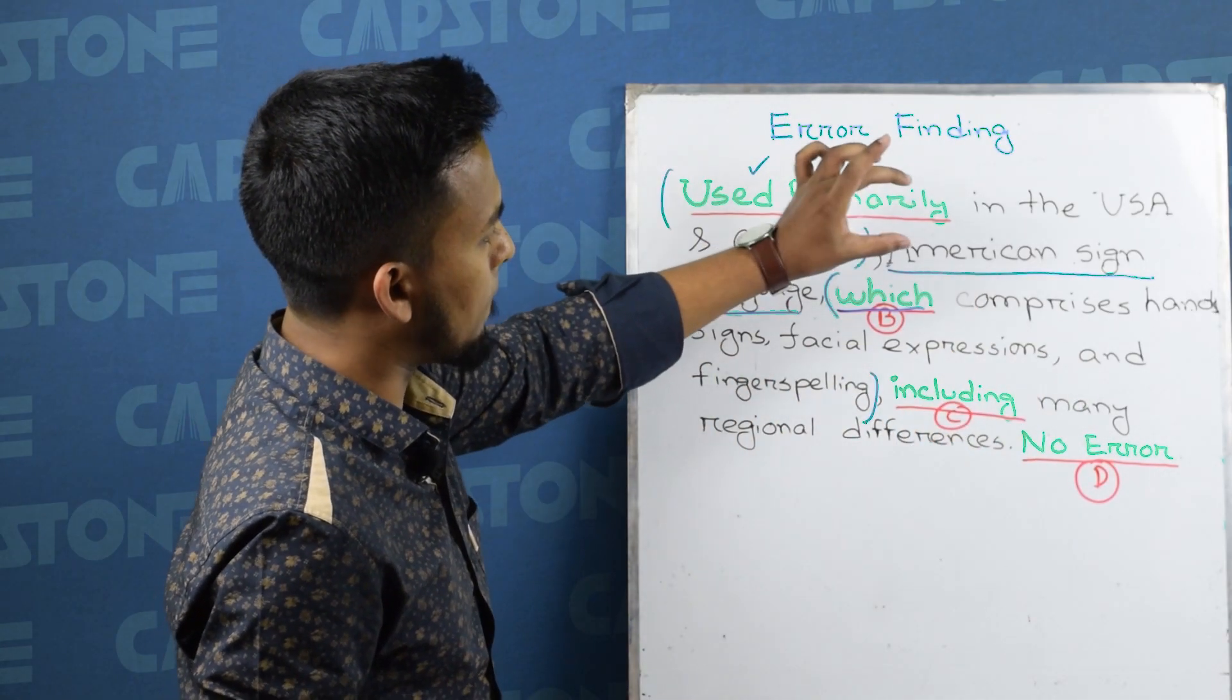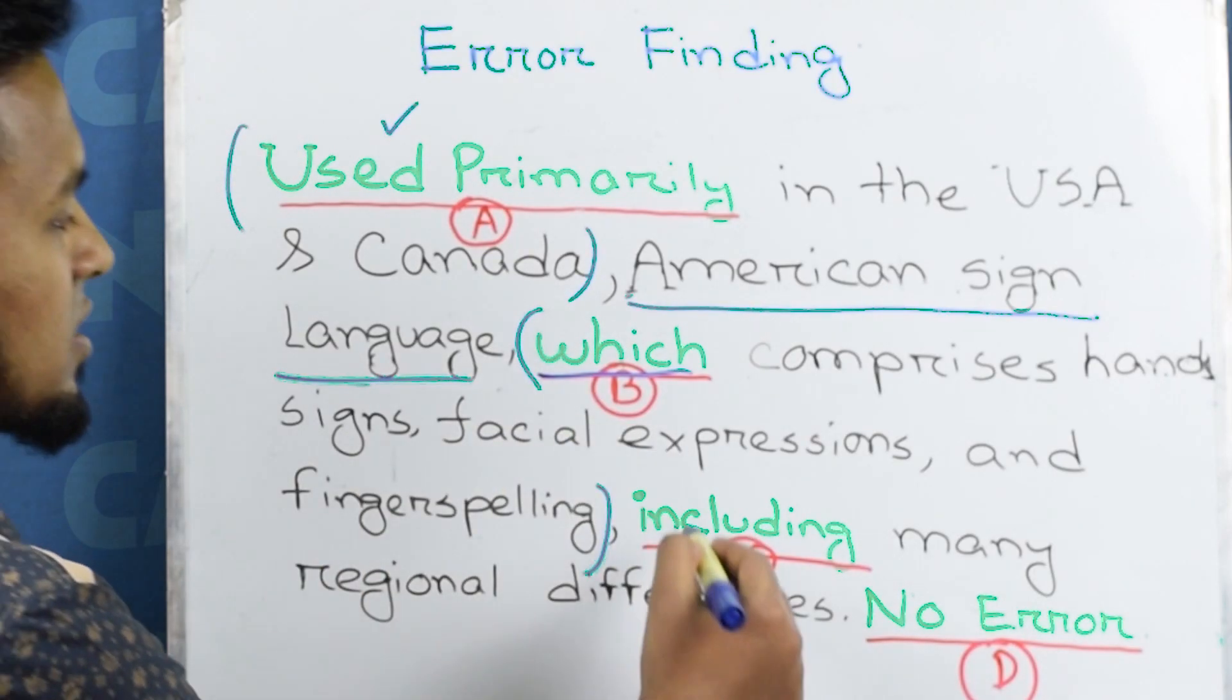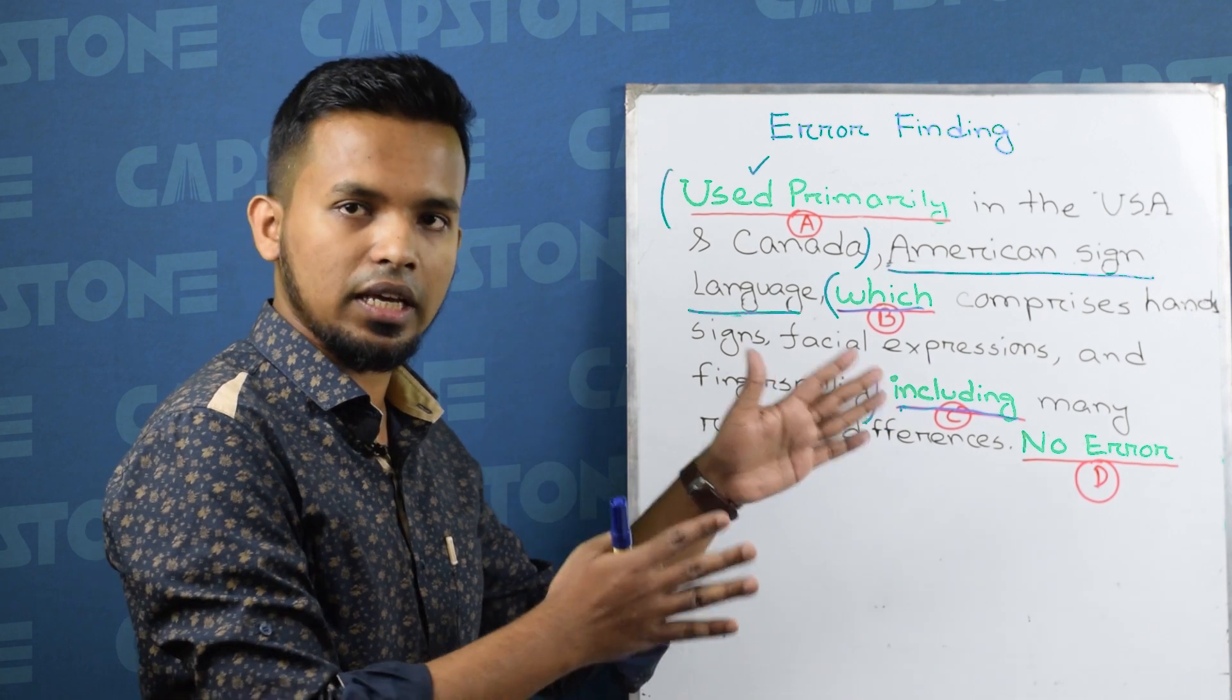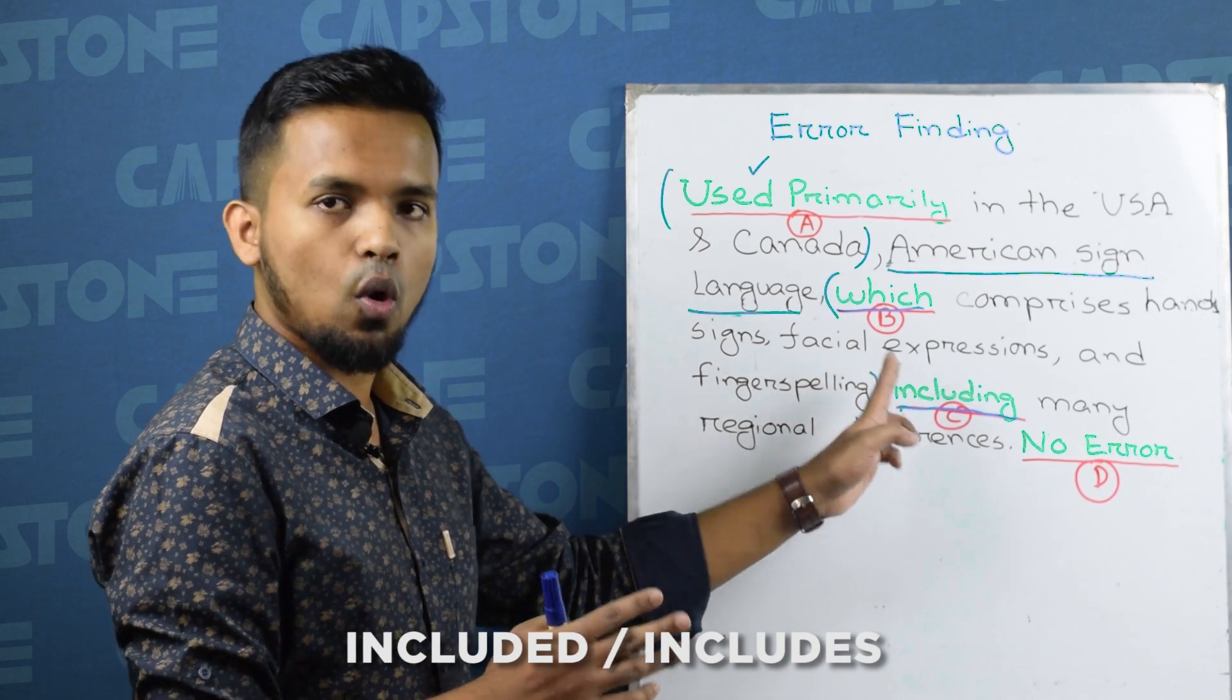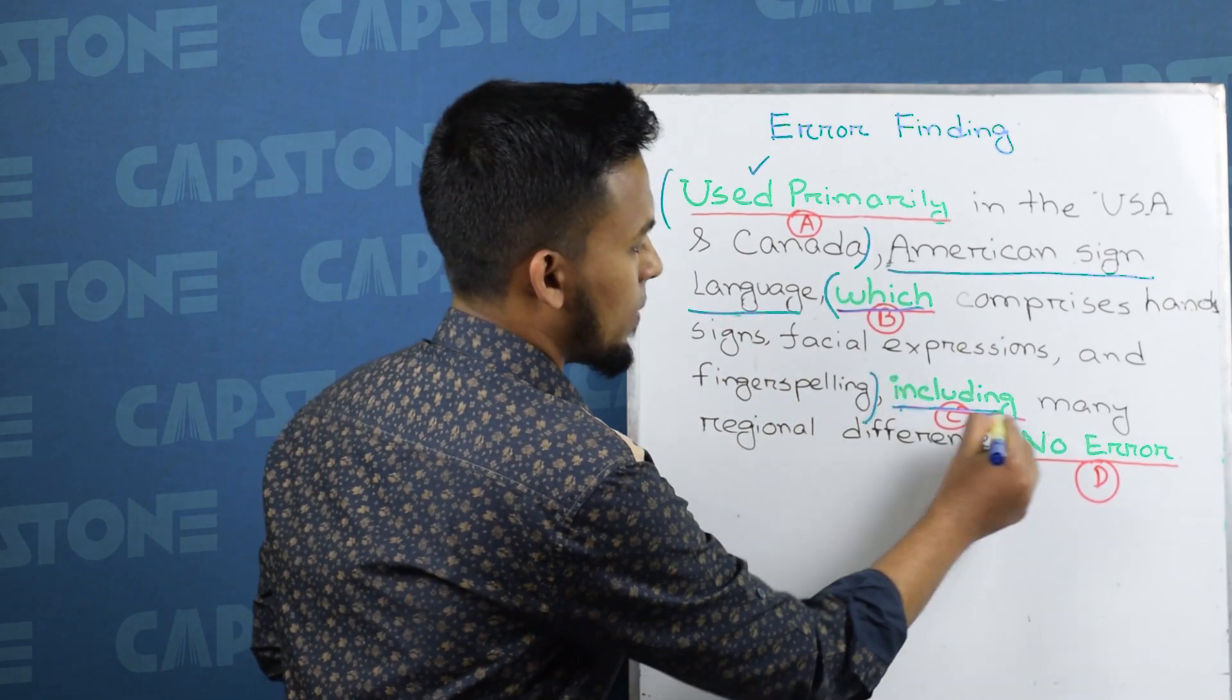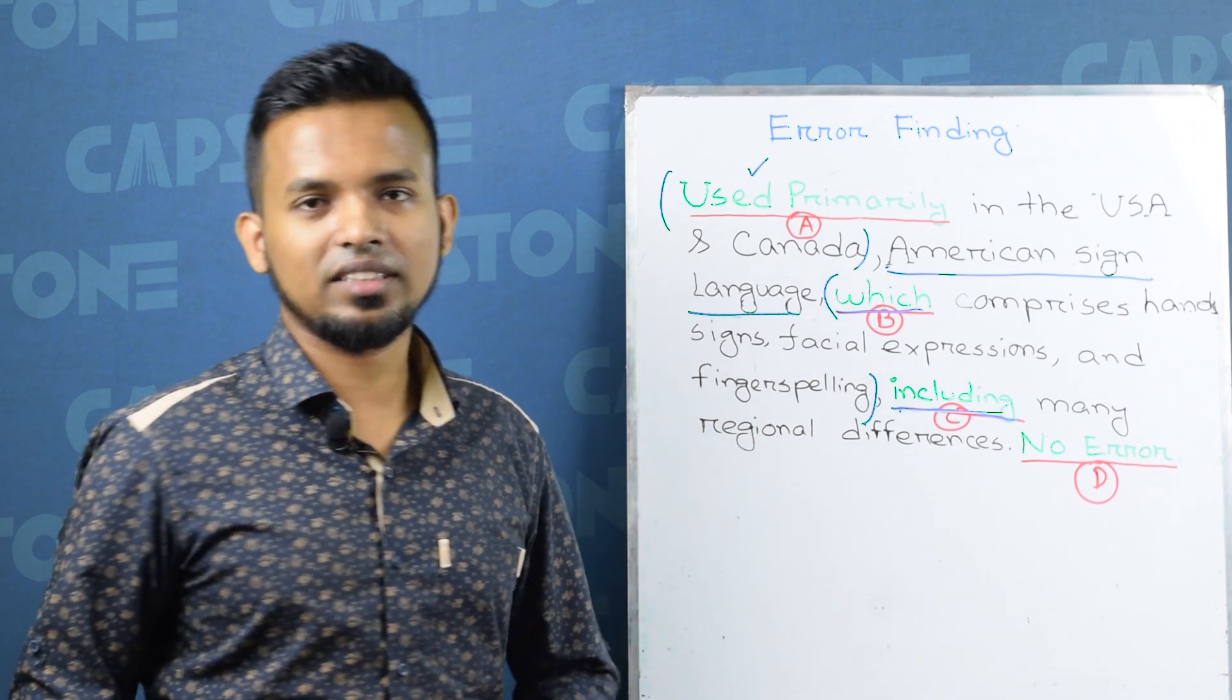After American Sign Language then there is no finite verb. We know that one subject carries one finite verb, right? So in this case, including here is not a finite verb, this is gerund or participle. It should be includes, either in present tense or included in past tense. So this is the error part and that's why we are not going for D. This is how you can find an error in a sentence. Thank everyone for watching this.